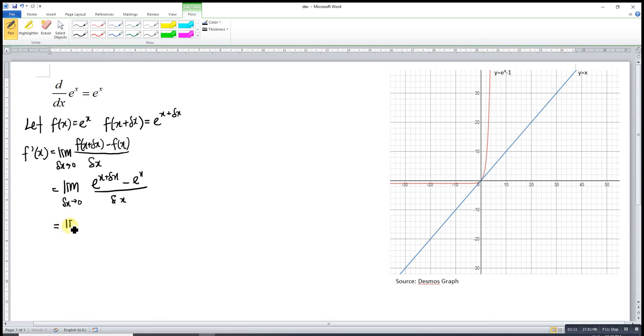So delta x approaches 0 for the function e^(x + delta x) minus e^x over delta x. So we have limit delta x approaches 0.